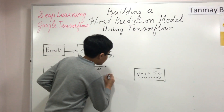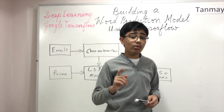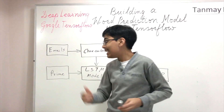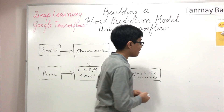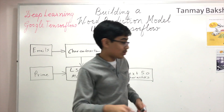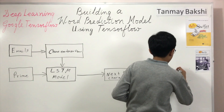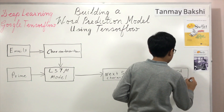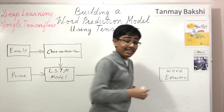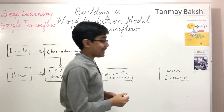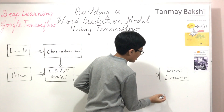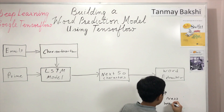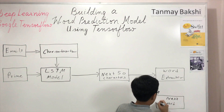Once the LSTM model gives you those next 50 characters, you've got multiple different words predicted one after the other. You need a way to extract the next word that the LSTM predicted. What happens is you feed those characters into a very small Python script — a word extractor — that finds the next word the LSTM predicted after your prime text. The word extractor then gives you the next word that the LSTM believes you would write.